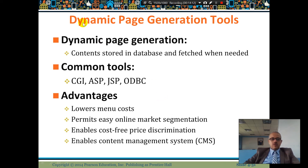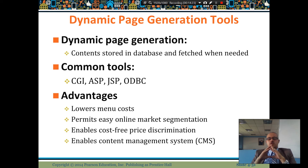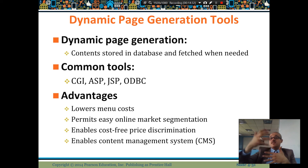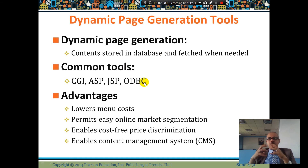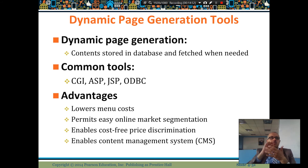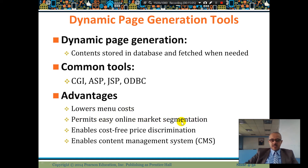Dynamic page generation tools store content in a database and fetch it when needed. The web server generates pages to make it faster. Tools like ODBC allow you to access other databases — for example, a website connects to a database to retrieve news or information. Dynamic page generation lowers menu costs, permits easy online market segmentation, enables cost-free price discrimination, and supports content management systems.